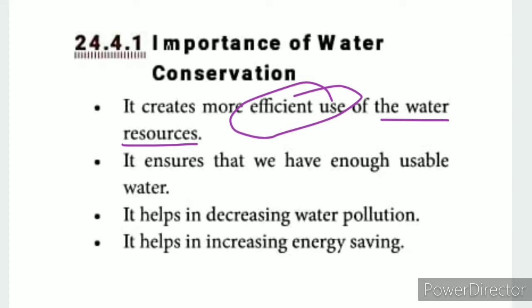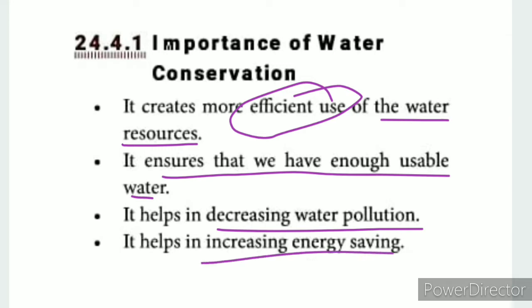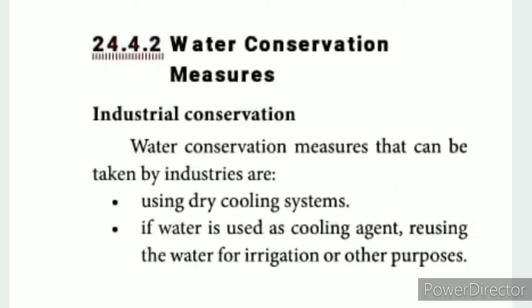Water conservation ensures that we have enough usable water. It helps in decreasing water pollution. It also helps in increasing energy saving. These are the water conservation methods that can be taken by industry.